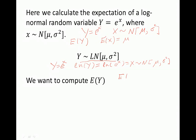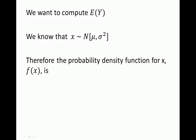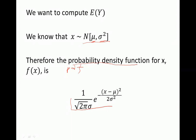We know the expectation of x is mu, but here we're interested in the expectation of y — that is, the expectation of e to the power of x. Since x is normally distributed, we know a lot about x. The mean of x is mu, the variance of x is sigma squared, and we also know the probability density function, the PDF of x, which equals this expression here.